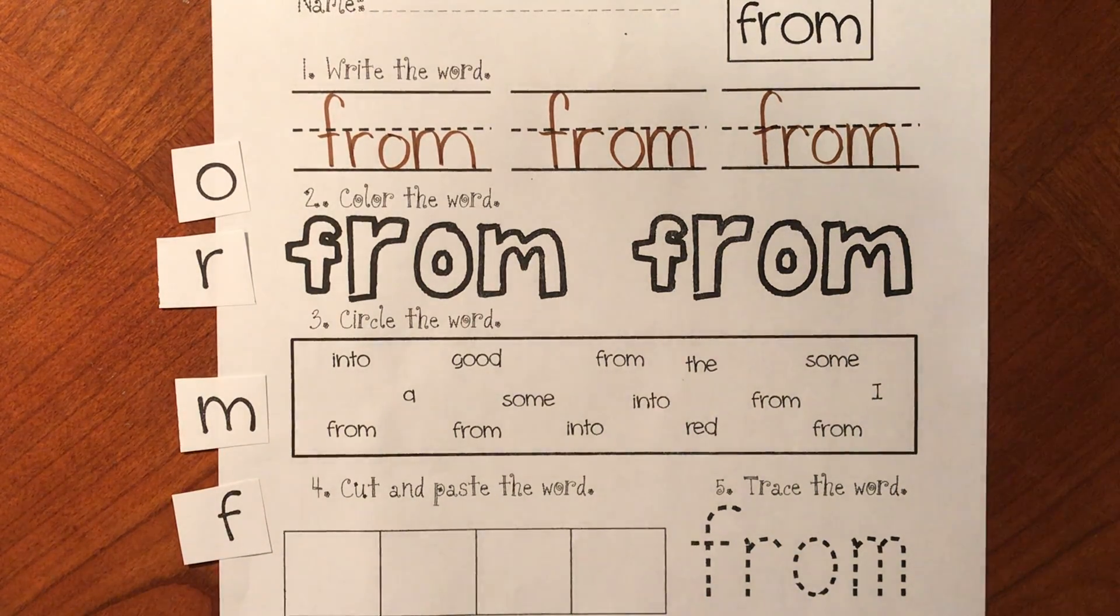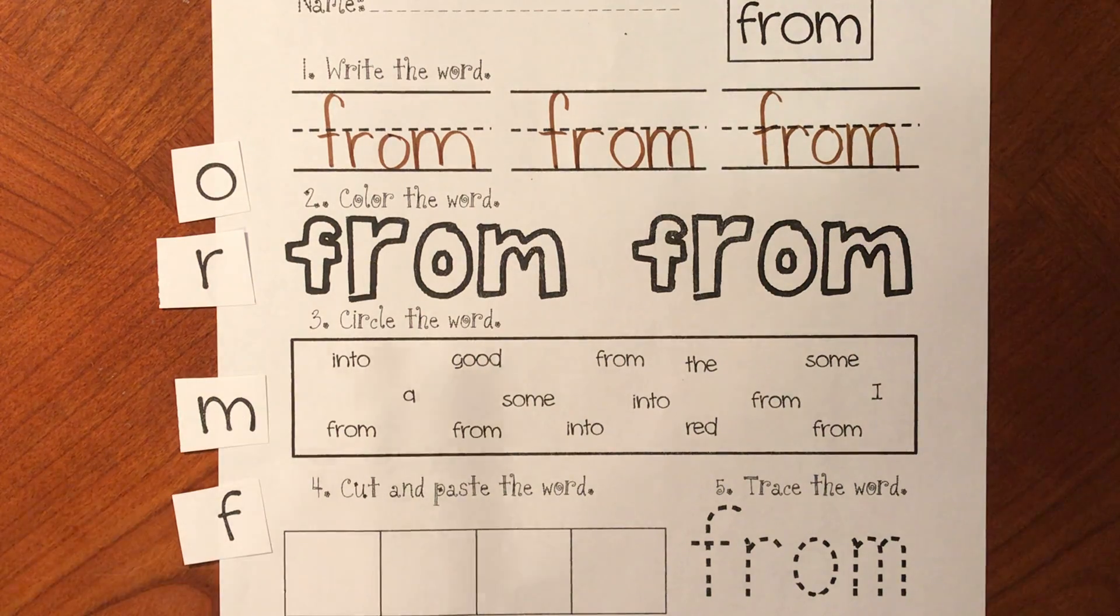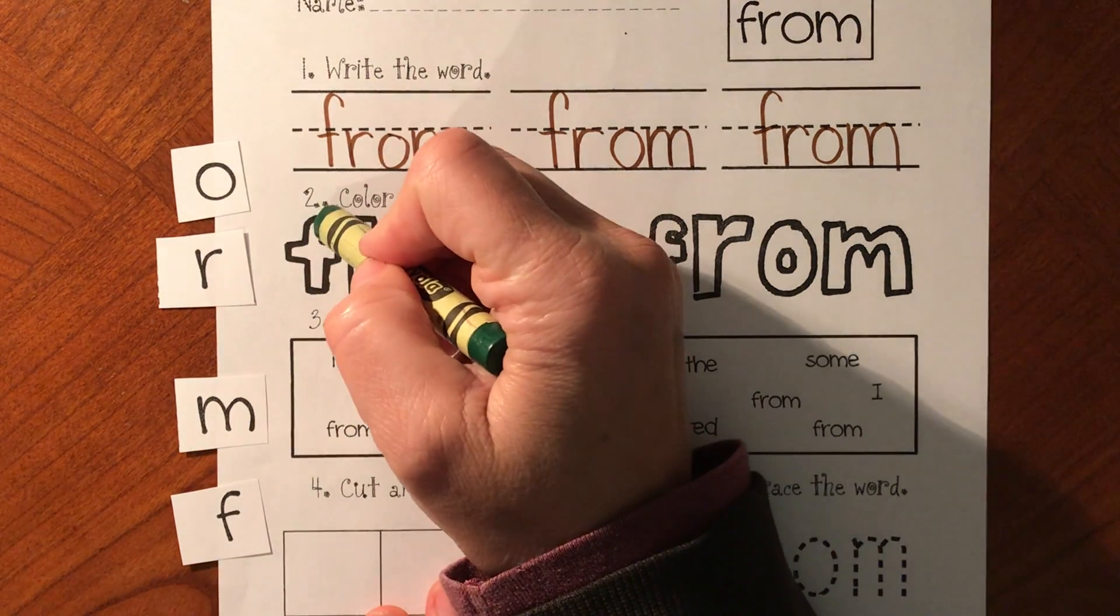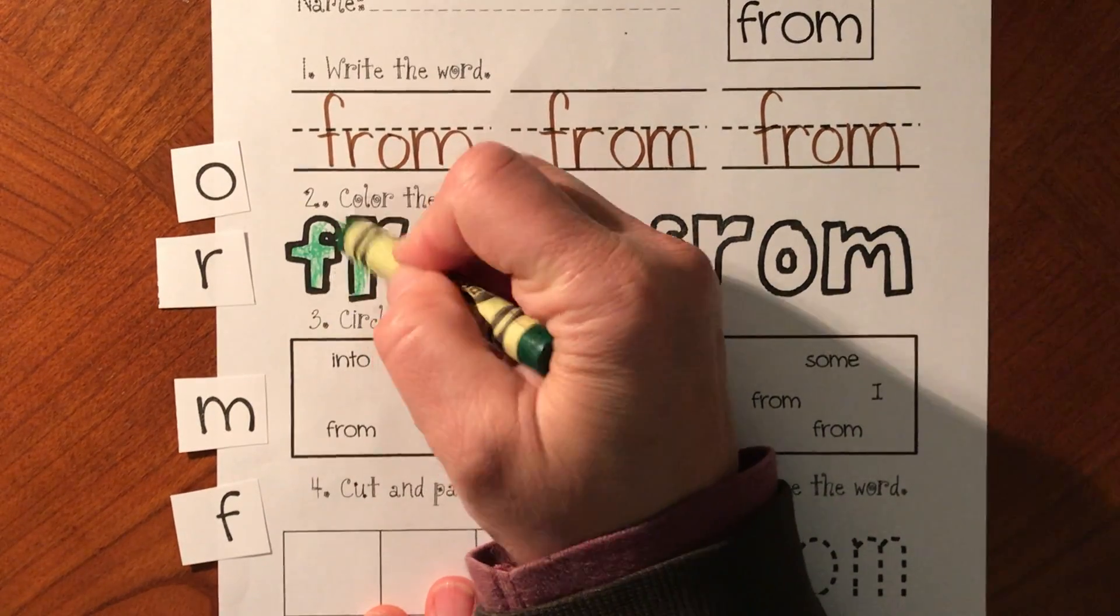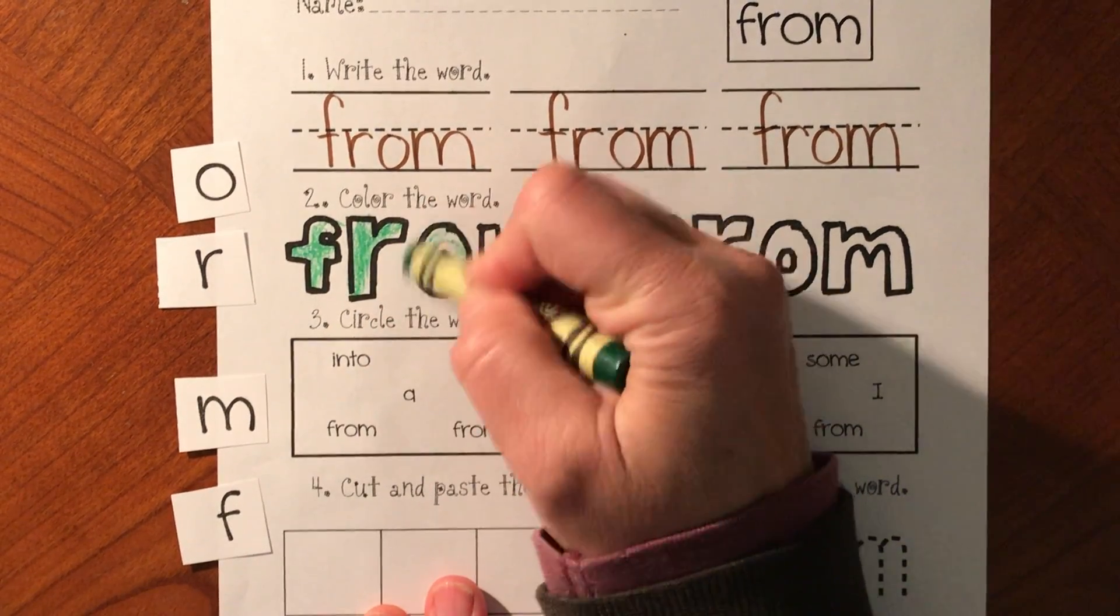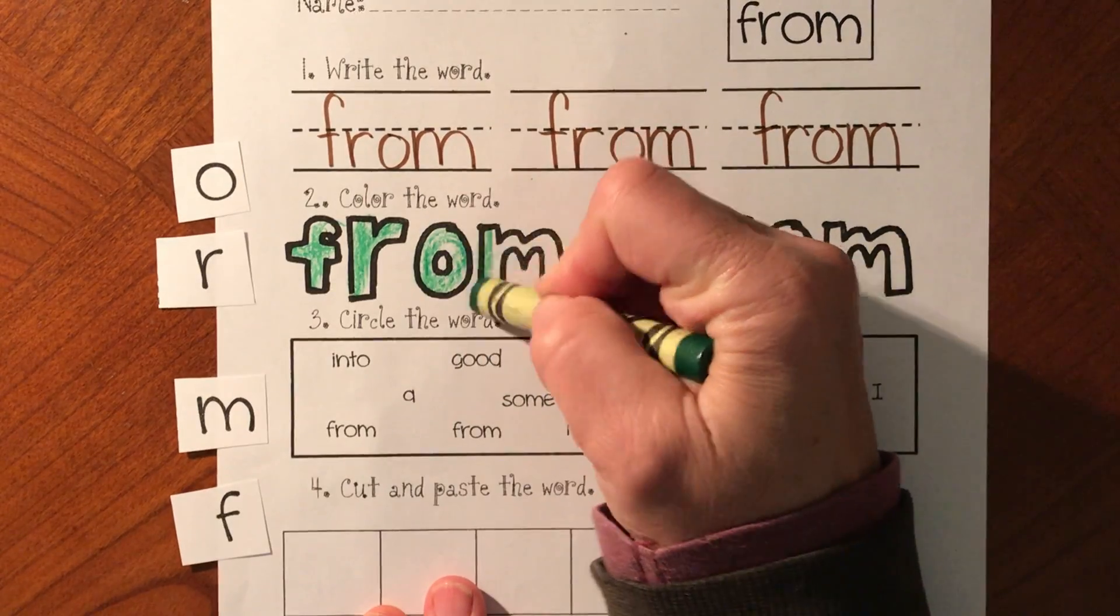All right, friends. Now that we've written the word from, choose a crayon and say the letters as you color from. F-R-O-M. From.